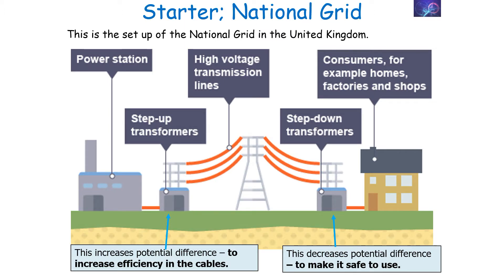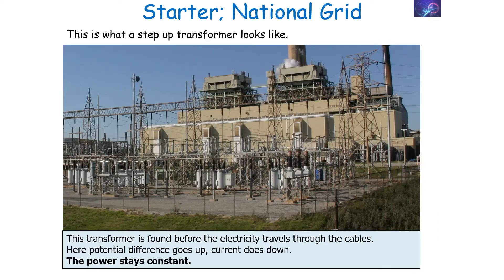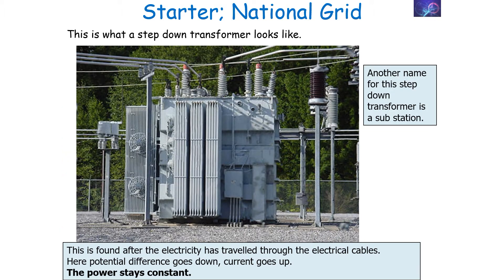This is the setup of the national grid in the United Kingdom. You have a step-up transformer, which increases the potential difference, and a high-voltage transmission cable, then a step-down transformer to decrease the potential difference. In the step-up transformer, potential difference goes up and current goes down, leading to power staying constant. In the step-down transformer, potential difference goes down, current goes up, and power stays constant, which takes place after electricity has travelled through the transmission cables.